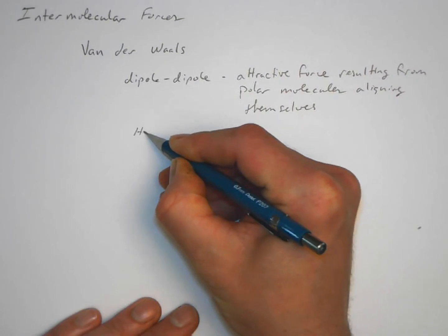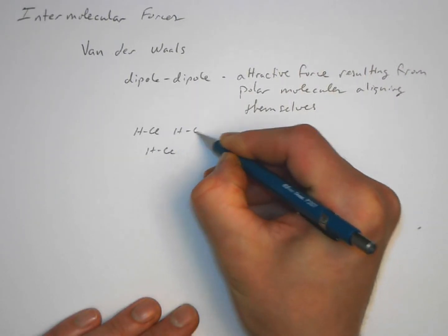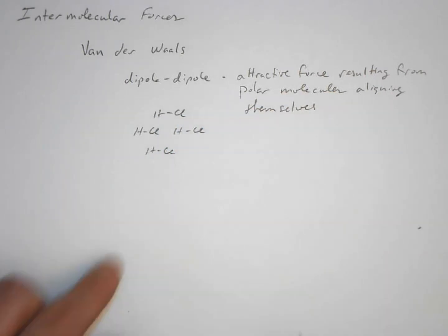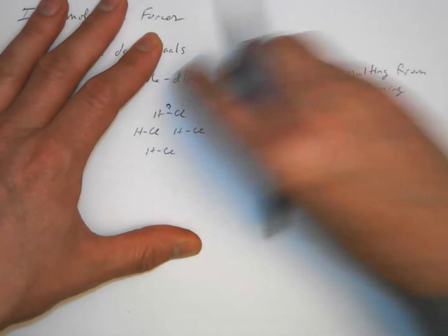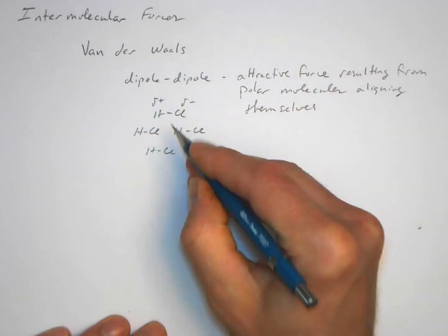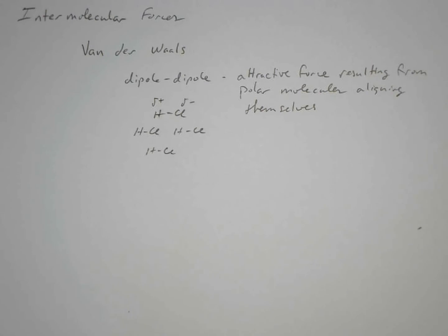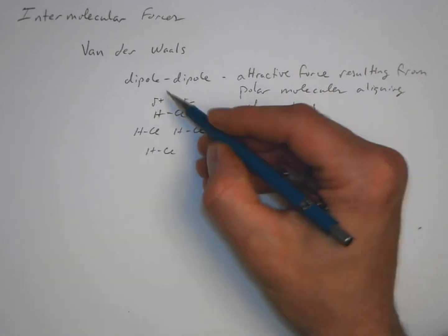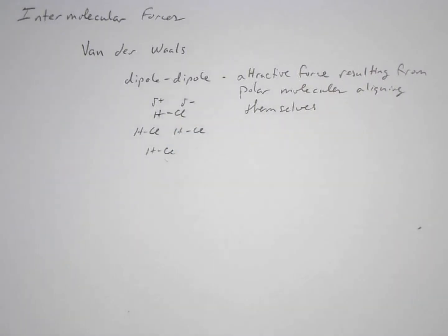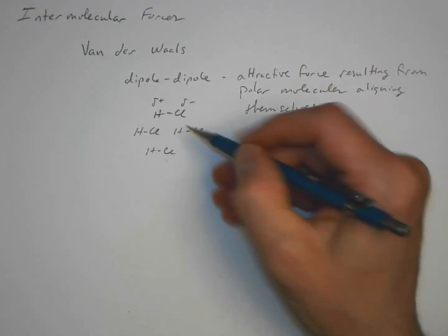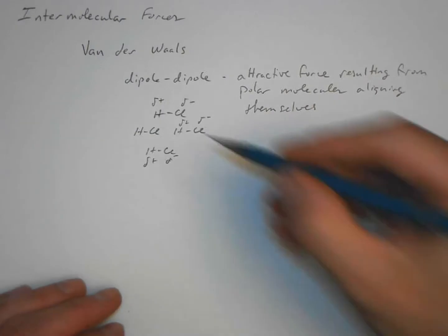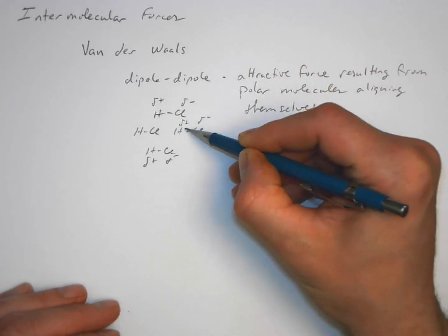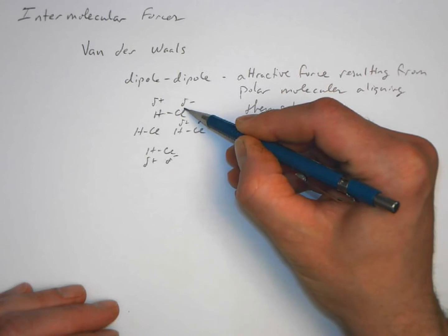For example, a polar molecule like HCl — one end of the HCl molecule is slightly more positively charged than the other. The hydrogen side is a bit more positive; in other words, there's more electron density around the chlorine because of chlorine's higher electronegativity. Coulombic attraction is going to make it so that there's a slight attraction between the positive end of one molecule and the negative end of another.